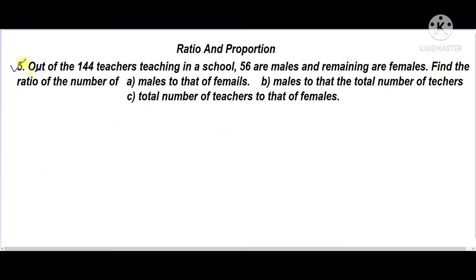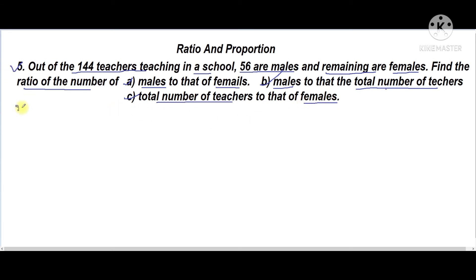Question number five: out of 144 teachers in a school, 56 are males and the remaining are females. Female teacher count is not given. We need to find the ratios of males to females, total teachers to females, and males to total teachers.